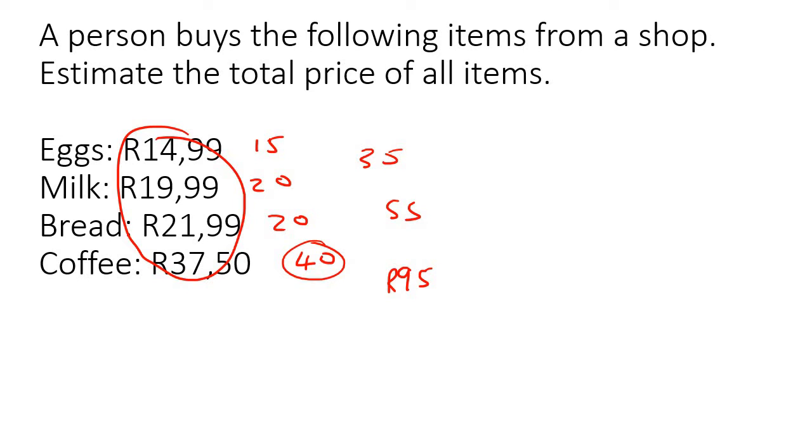With a calculator, if you had to add this up, you get 94 rand and 47 cents. So can you see that it's much faster for us to just estimate? And look, the answer's pretty close. So estimating is a nice way to just find not the exact answer, but the answer that's fairly close in a very short amount of time.